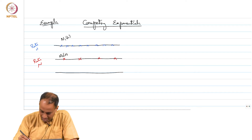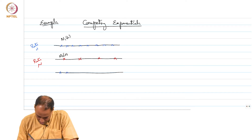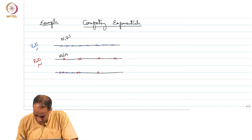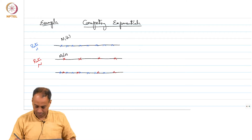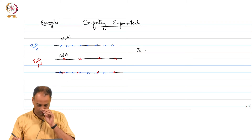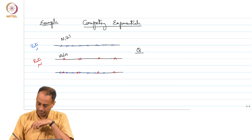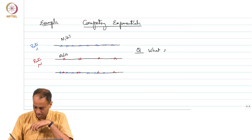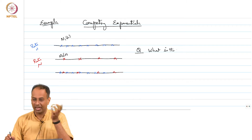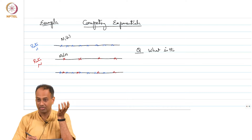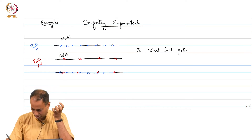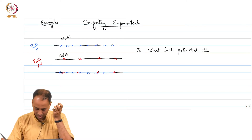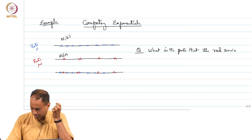So you look at this combined process: N1 plus N2. I will draw a few points. Now I want to look at — starting at some time t — what is the probability that the red arrival comes first.